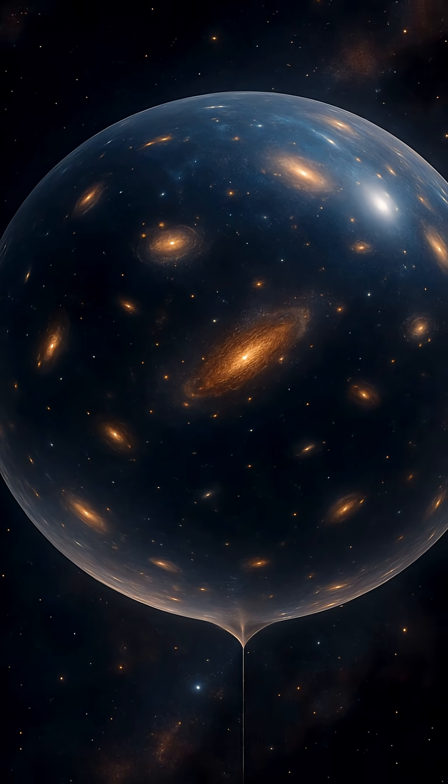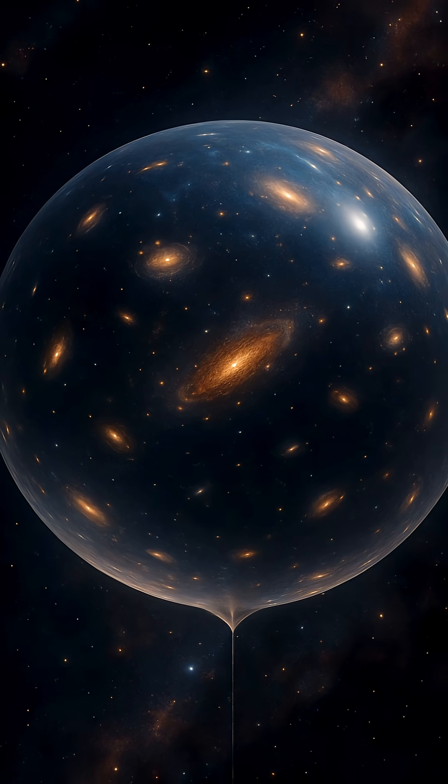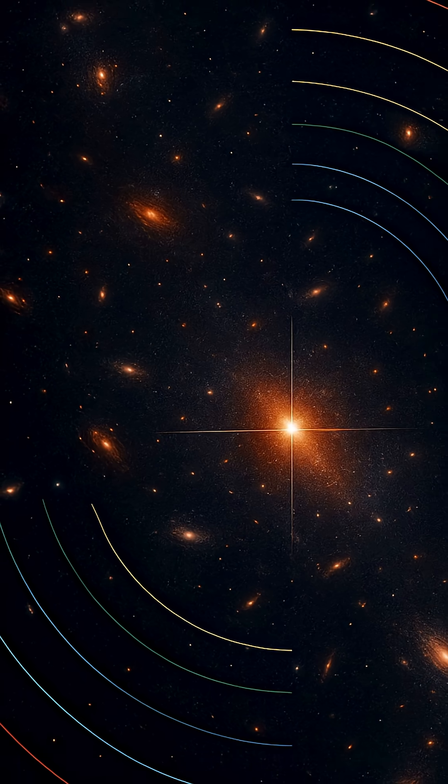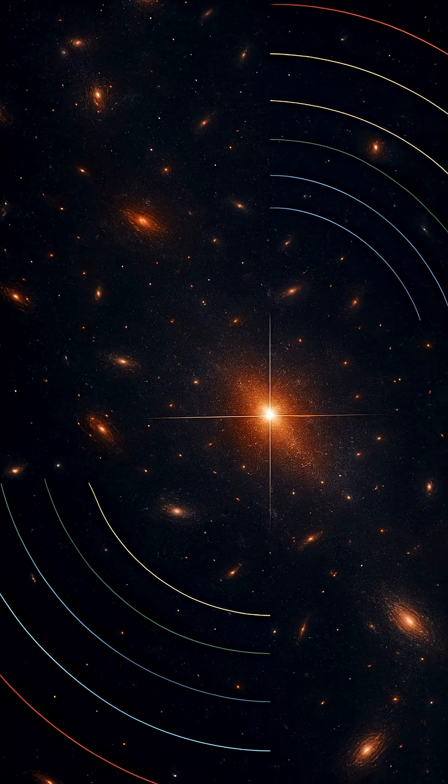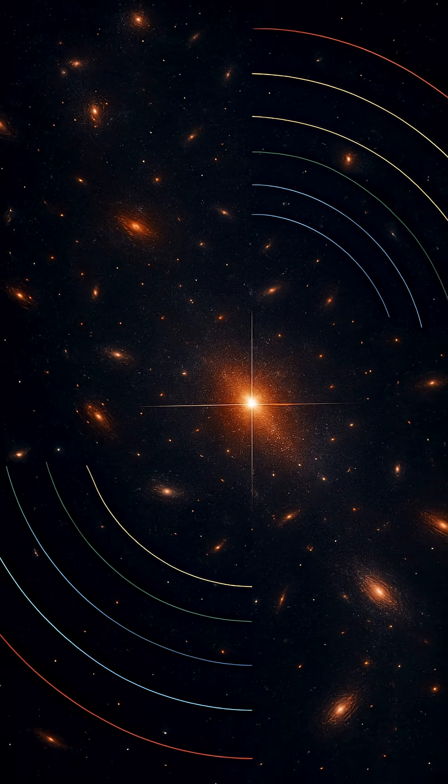The light from faraway galaxies was redshifted, stretched toward the longer, redder wavelengths. It was as if those galaxies were fleeing from us, their light pulled like taffy by motion itself.